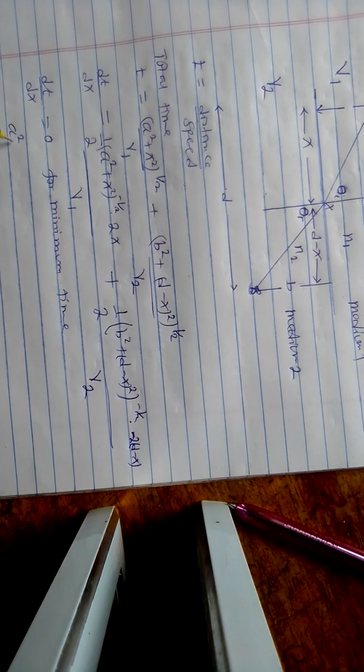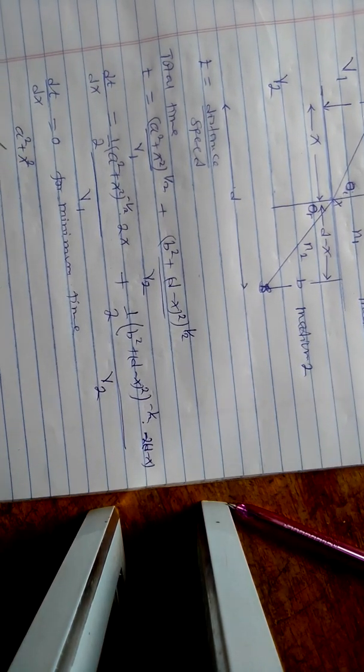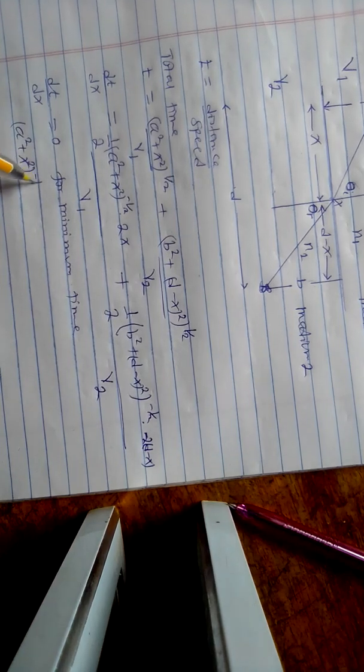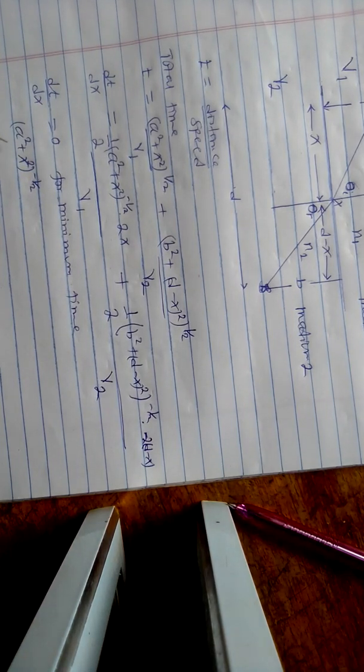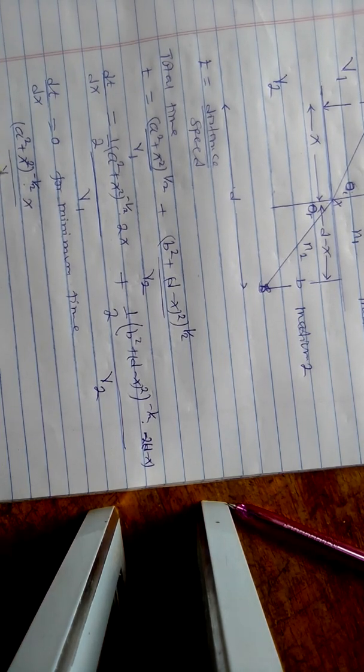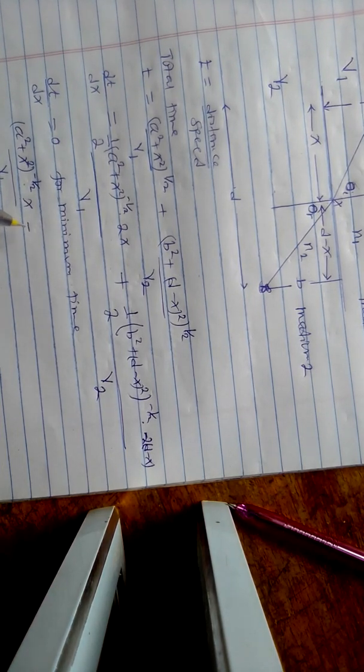So we shall have X over the square root of A squared plus X squared times V1, minus...